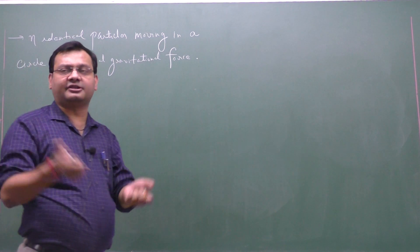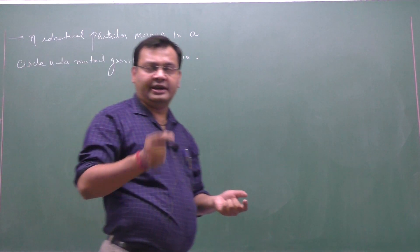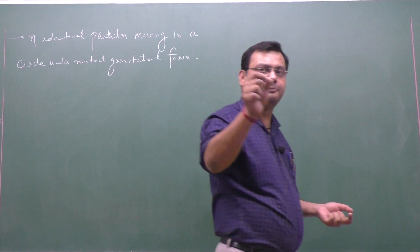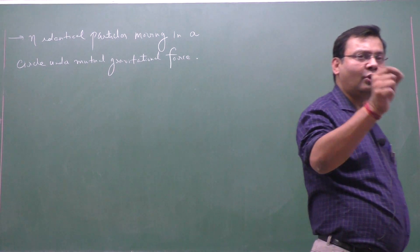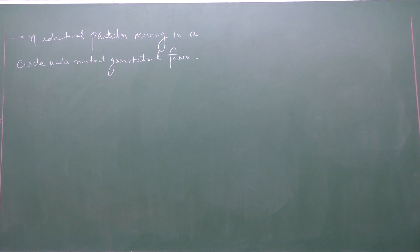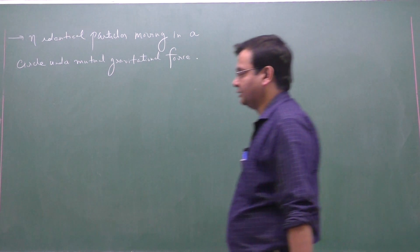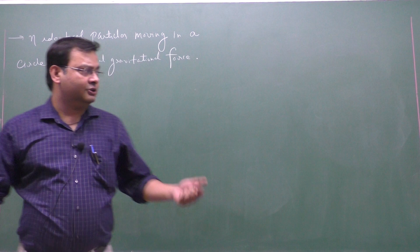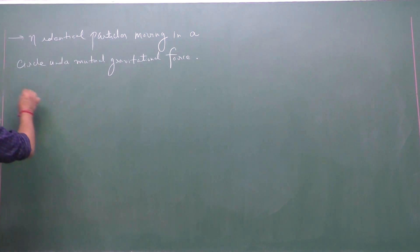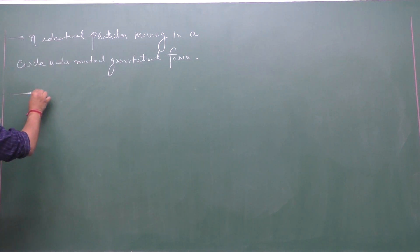Each identical particle will be located at the vertices of an n-sided regular polygon inscribed in a circle. By symmetry, at any instant each particle occupies one vertex of that regular polygon.